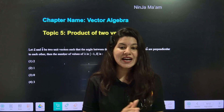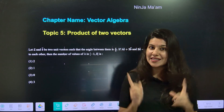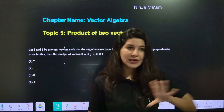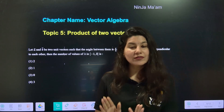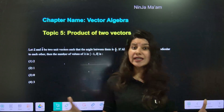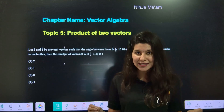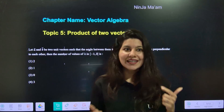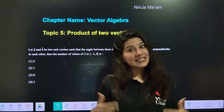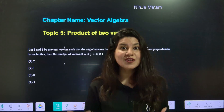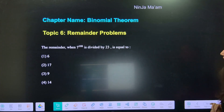Topic number 5 is product of two vectors. It could be completely dot product, completely cross product, or a combination of dot and cross. A Ninja technique is also explained to solve such problems. Links will be provided.